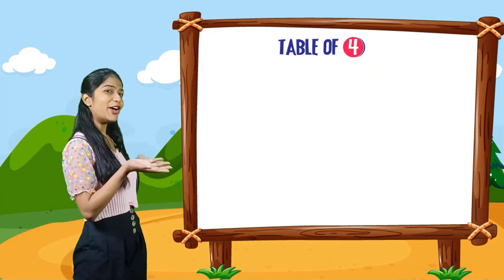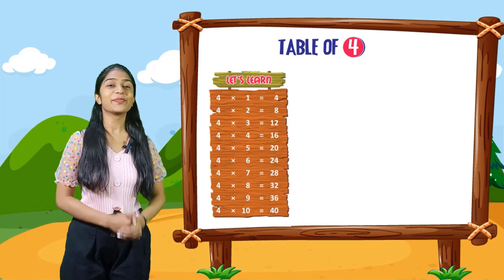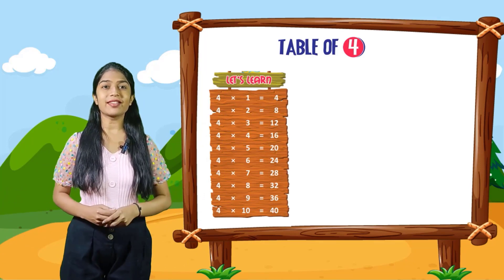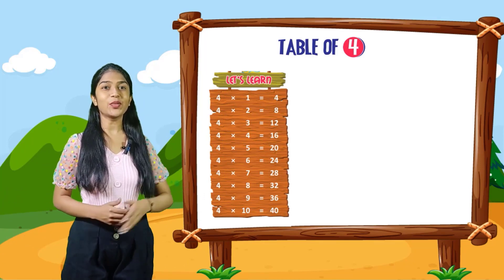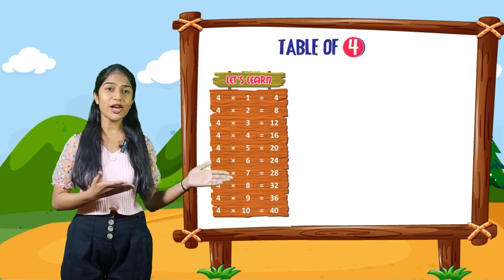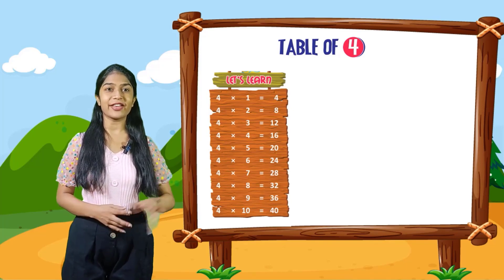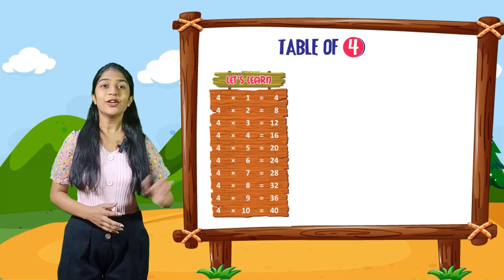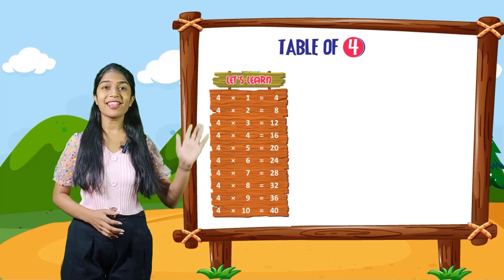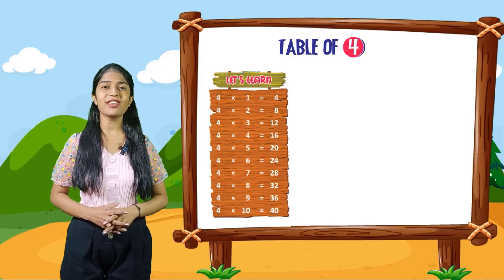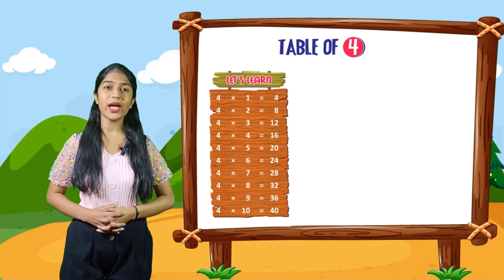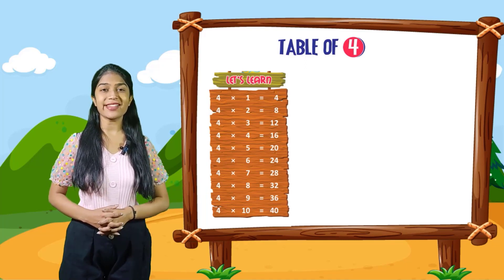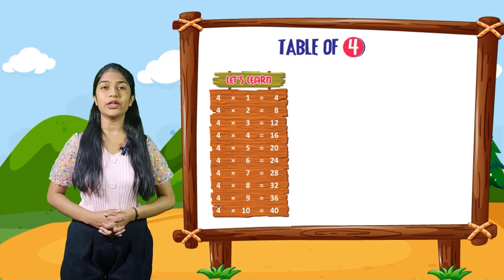So kids, now let's start the table of 4. Let's learn. 4 into 1 is equal to 4. 4 into 2 is equal to 8. 4 into 3 is equal to 12. 4 into 4 is equal to 16. 4 into 5 is equal to 20. 4 into 6 is equal to 24. 4 into 7 is equal to 28. 4 into 8 is equal to 32. 4 into 9 is equal to 36. 4 into 10 is equal to 40.